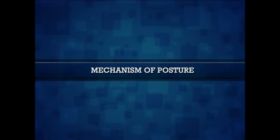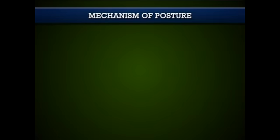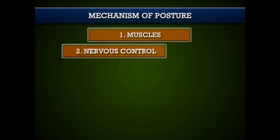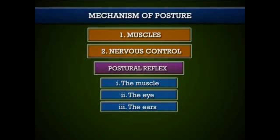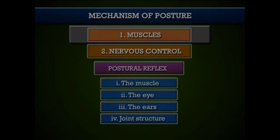Here comes the mechanism of posture. The mechanism of posture involves muscles and nervous control. Through nervous control, we have postural reflexes. The intensity and distribution of muscle work required for both static and dynamic posture varies considerably with the pattern of posture and the physical characteristics of the individual. The groups of muscles most frequently employed are those used to maintain the erect position by counteracting the effect of gravity, consequently known as antigravity muscles, whose action with regards to joints is usually that of extension.